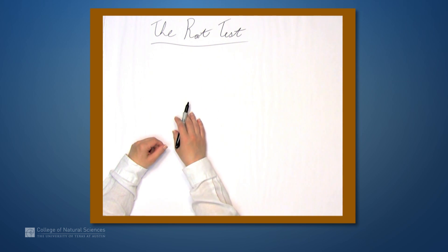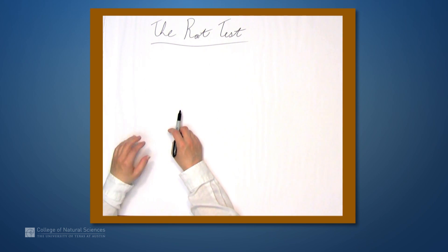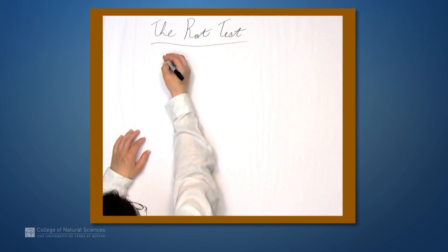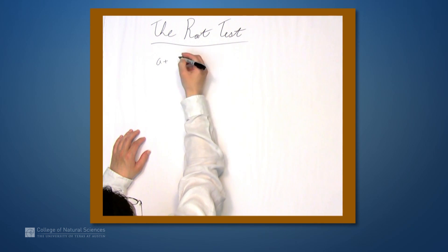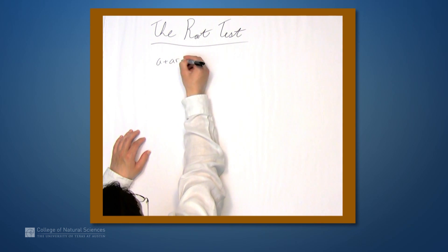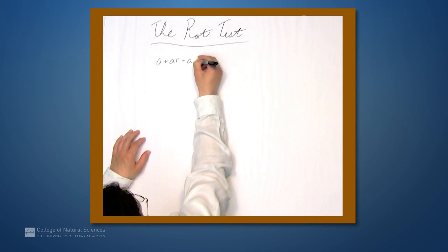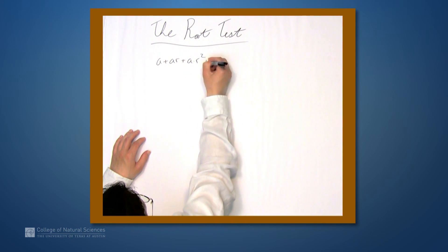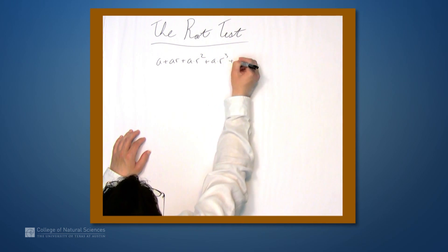We're here at the example table, and in this video we're going to be talking about the root test. Let's motivate this by looking first at a geometric series: a plus a times r plus a times r squared plus a times r cubed and so on.